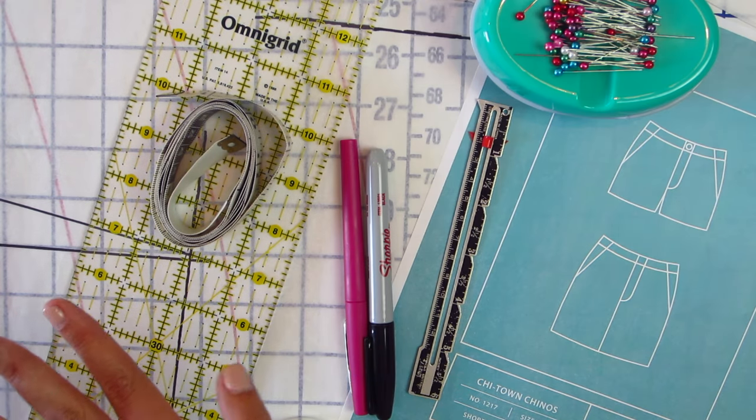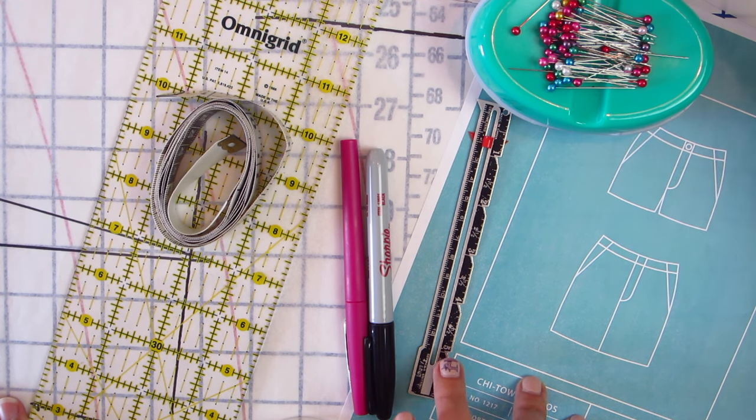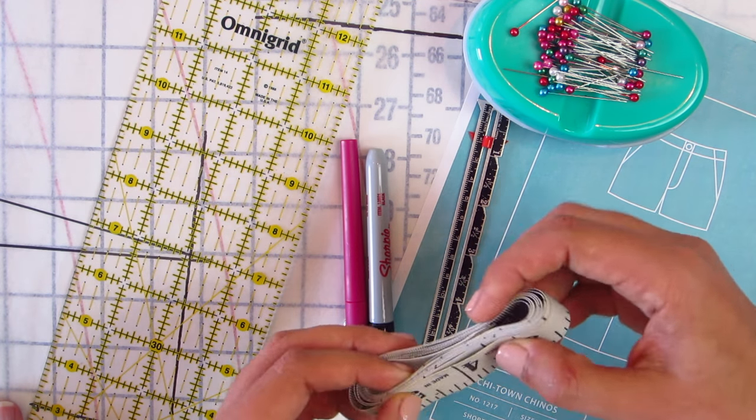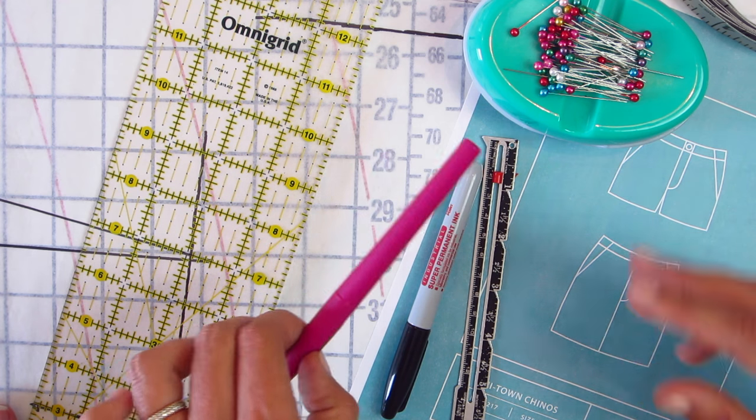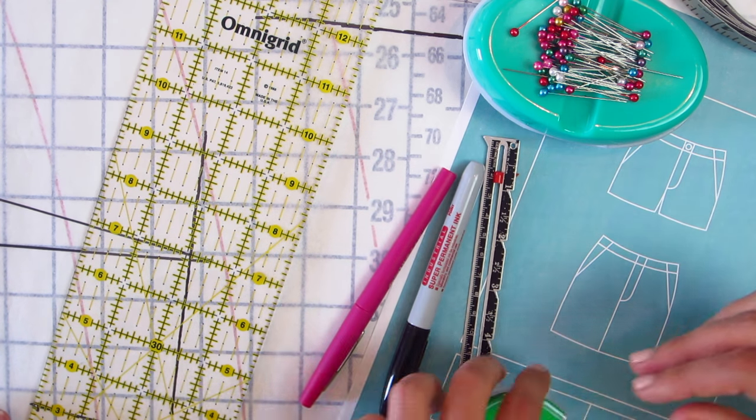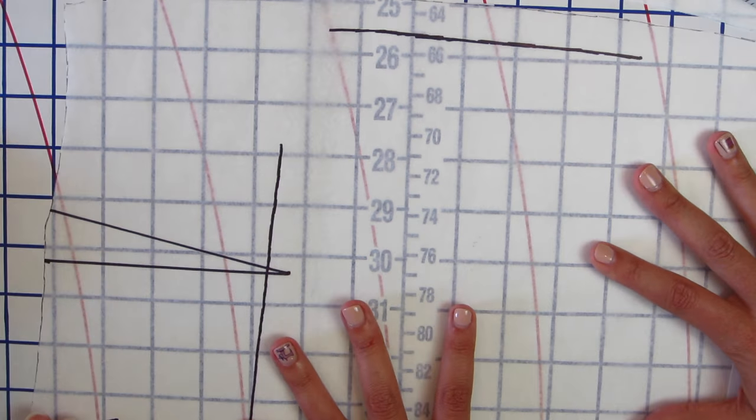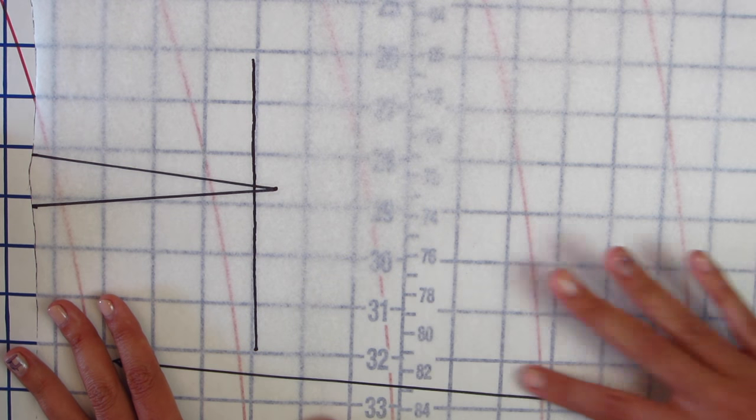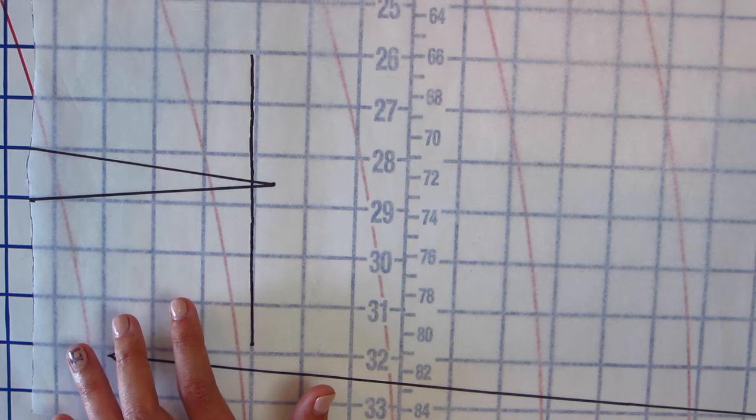So after we figured out all of that, we know we need to add an inch. We gathered all of our supplies and here's what you need to do a full seat adjustment or really any adjustment. You're going to need pins, you're going to need some strips of tracing paper which we have here, you need a measuring tape which we technically already used but we might use a little bit later if we need to figure out some math. Hem gauge, a black marker, a marker that's in a different color to make your adjustments, some tape, a clear ruler.